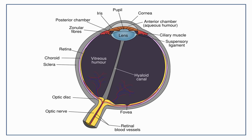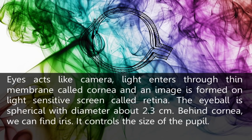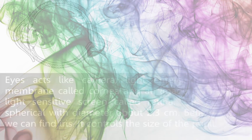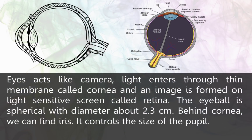The eye acts like a camera. Light enters through a thin membrane called the cornea, and an image is formed on the light-sensitive screen called the retina. The eyeball is spherical with a diameter of about 3.3 centimeters. Behind the cornea, we can find the iris.